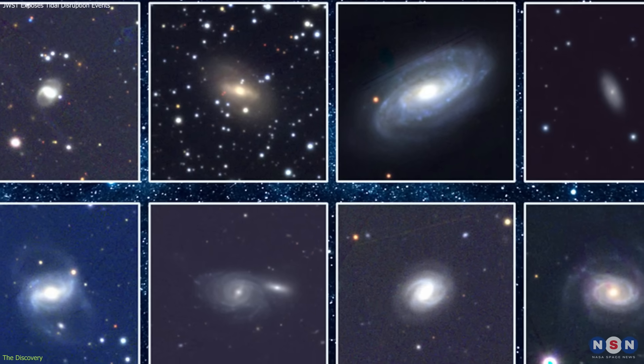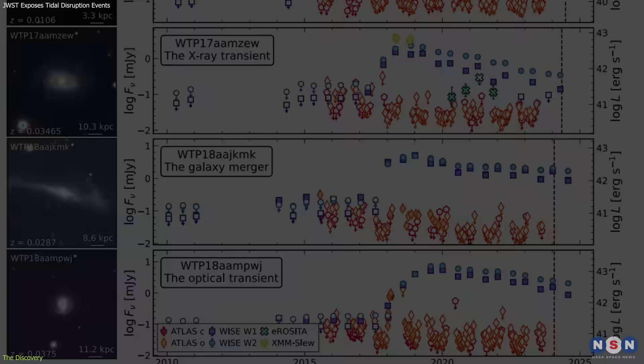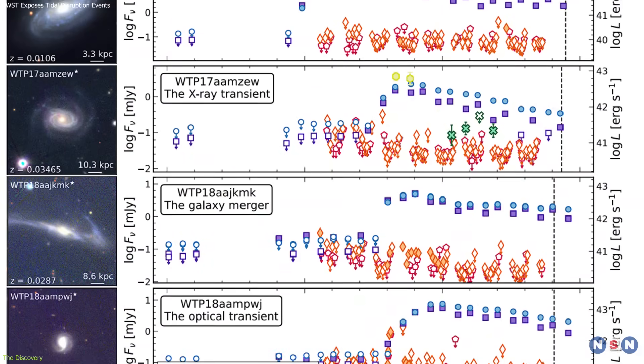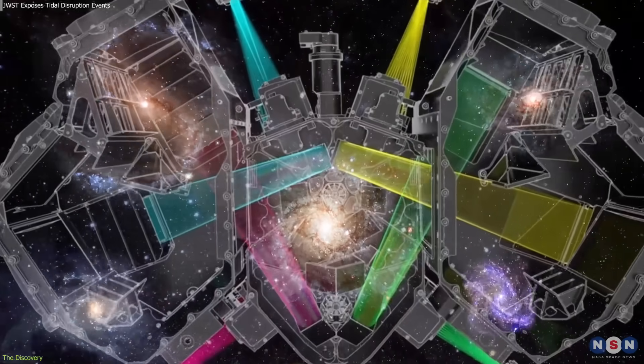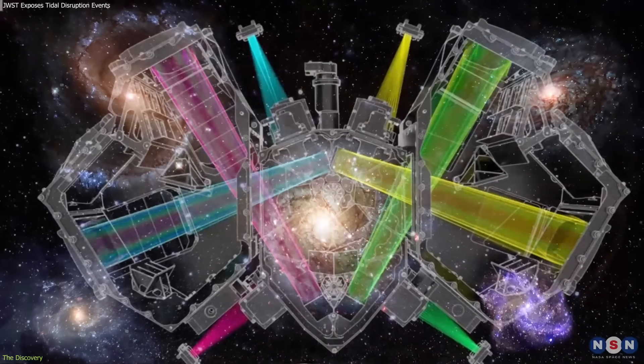From this survey, scientists identified several candidates, and four of the strongest were chosen for follow-up with JWST. When Webb's mid-infrared instrument observed them, the results were decisive.